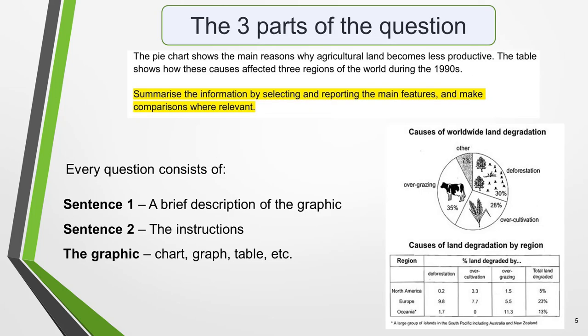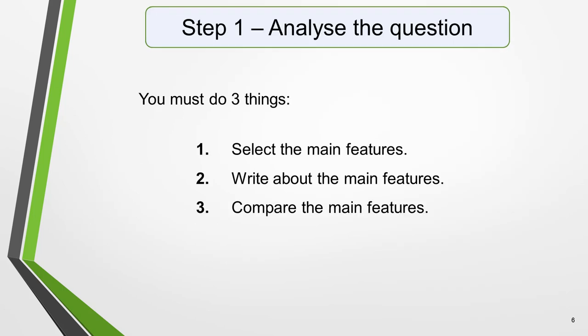The format of every Academic Task 1 question is the same. Here's our practice question again with the words that will be included in all questions highlighted. Every question consists of sentence one, which is a brief description of the graphic; sentence two, the instructions; and sentence three, the graphic itself, which might be the diagram, the chart, graph, table, etc.